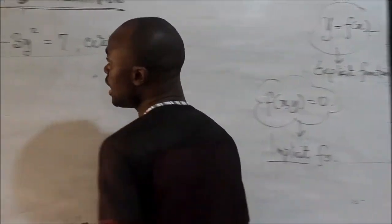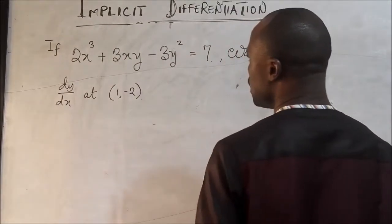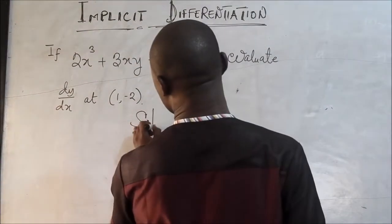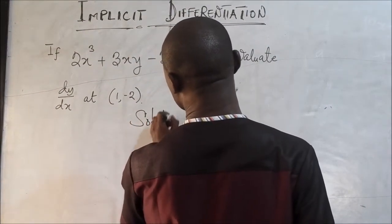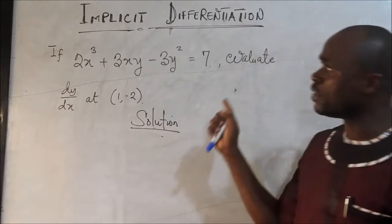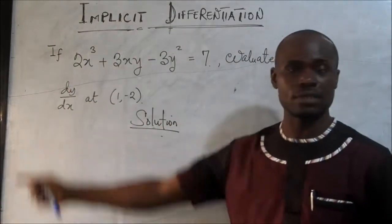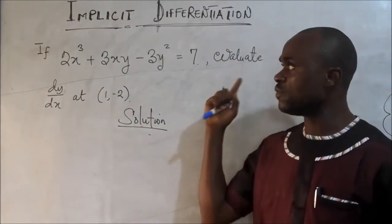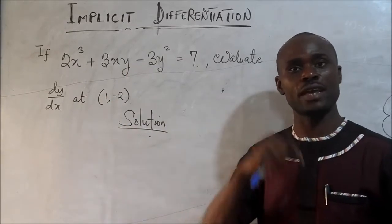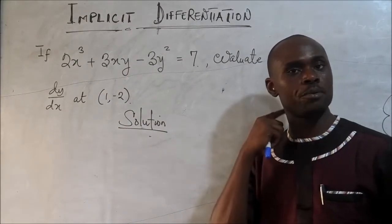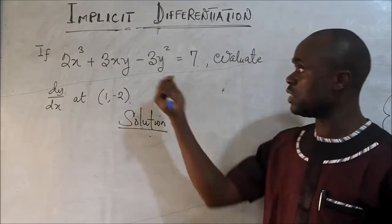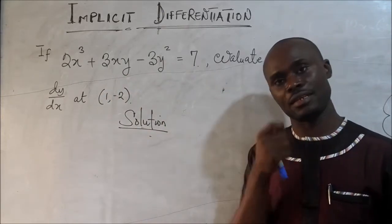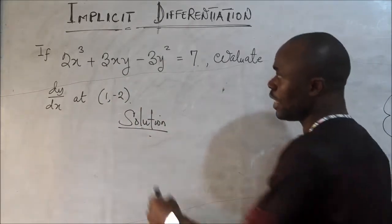Now let's go back to this so that we can solve this. Now solution, the first thing we will understand is that to solve this you have to differentiate everything. When you differentiate the function of x, you put dx over dx. When you differentiate the function of y, you have to differentiate everything. We will denote it as dy dx. Now let's do that together.